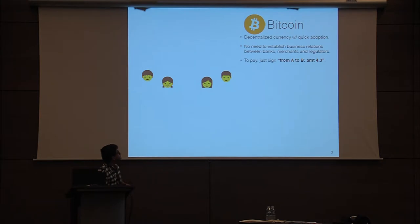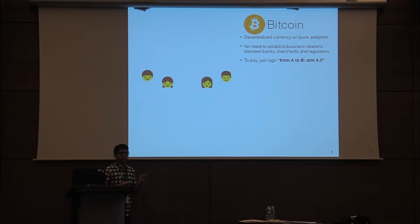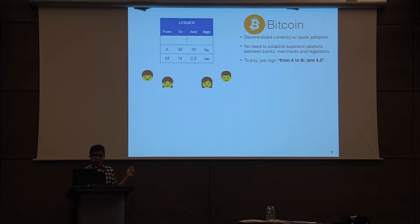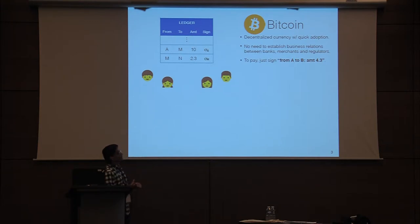So let's look at what's happening in the decentralized world. The cryptocurrency Bitcoin has seen widespread adoption across the globe, and one reason for this is that to transfer money to somebody I don't need to have even met them before. I don't need to establish relations with them, don't have to meet any regulations — I just sign the message and put it on some global ledger. In more detail, let's say Alice wants to send Bob $4.30: all she does is sign this message from A to B, amount 4.3, and put the message and the signature on a global ledger maintained by the nodes in the Bitcoin network.